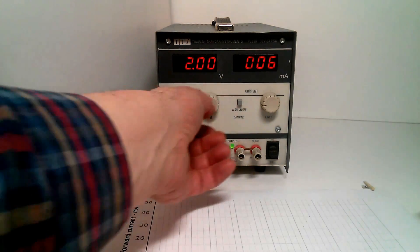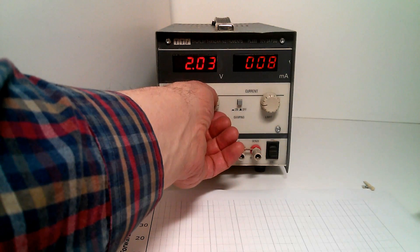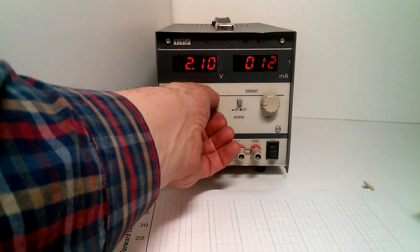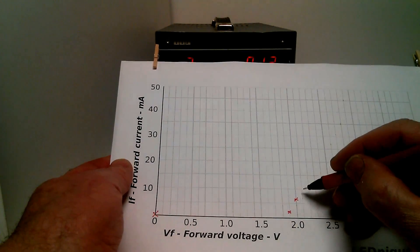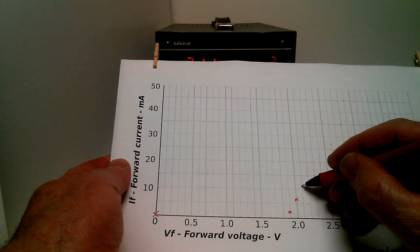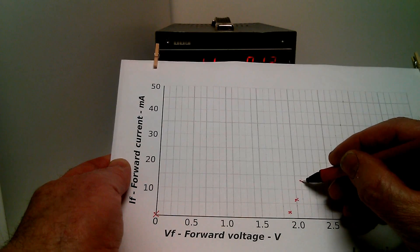We'll go up to 2.1. And now the current has gone up to 13 milliamps. There's 10, 11, 12, 13 will be a little of halfway there.